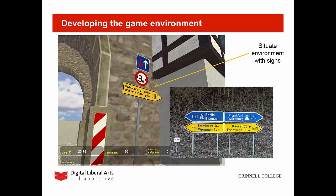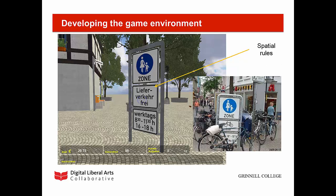Spatial rules were also encoded in these signs, such as the one you see here indicating priority over oncoming vehicles. Here's another sign describing spatial rules: delivery vehicles are allowed in the pedestrian zone on weekdays during the times indicated. Although I did not do it in this game release, it would be interesting to build game quests involving the reading of these signs — for example, a quest that requires the player to successfully deliver a package to a store in the pedestrian zone, which then unlocks information for future quests.